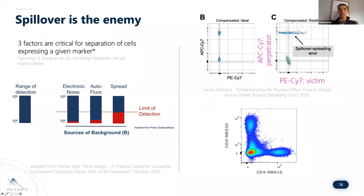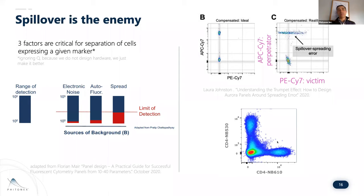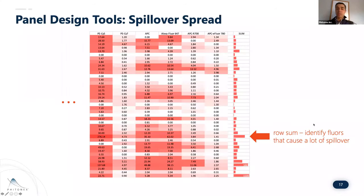This simple plot from single-stain controls — off an Attune, not an Aurora — from adjacent detectors at 530 and 610: post-compensation, we just aren't seeing spillover spreading. That's what gets us excited when we think about what you could leverage in a larger panel if you had eight, ten, or more fluorophores with this type of spread performance. The objective view: how do you characterize labels across all the ways they may interact with other fluorescent labels?